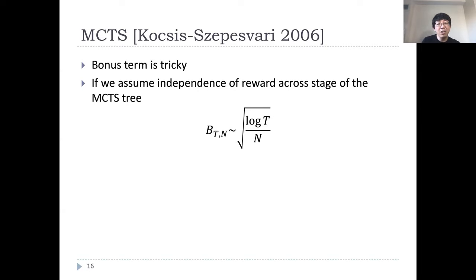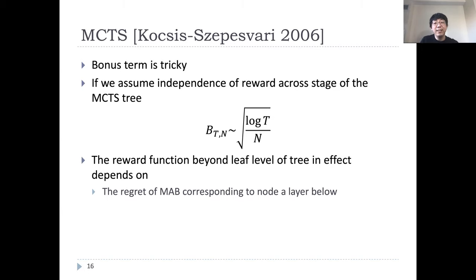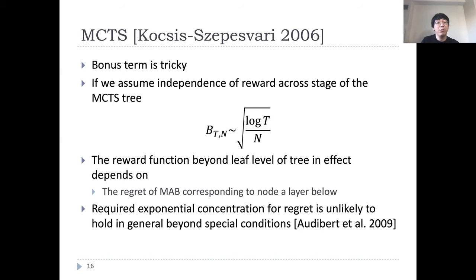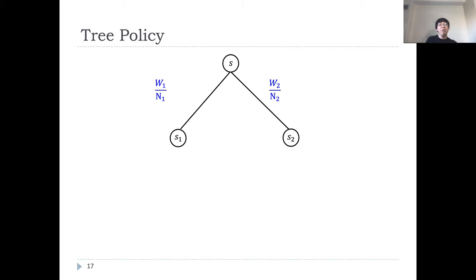However, there is a problem. This is not true in our simulation tree. The reward at an immediate depth depends on the regret of MAB for the node a layer below. And nodes a layer below depends on the next layer and so on. In effect, this creates complicated dependence on the subtree below. To use the logarithmic bound as suggested, it would require exponential concentration for regret at each depth, which is unlikely to hold in general. Indeed, an overlook of this issue leads to an incomplete proof with the naive logarithmic choice. In this work, we formally show that the dependence should be polynomial, and in particular, the bonus term should scale like square root of root T over M.